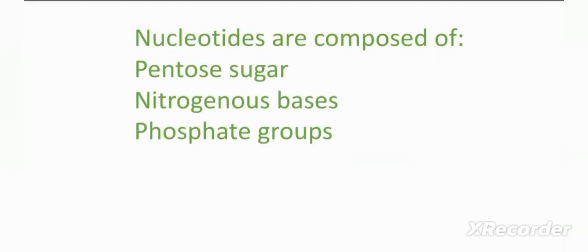Both DNA and RNA chains are composed of polymers of nucleotides. Nucleotides are composed of three components: pentose sugar, nitrogenous bases, and phosphate groups. We will discuss each of them one by one.